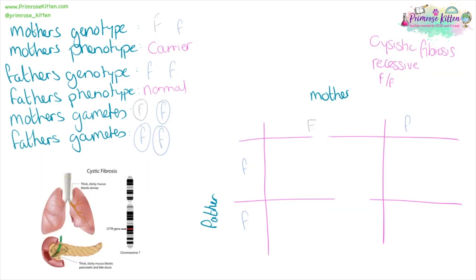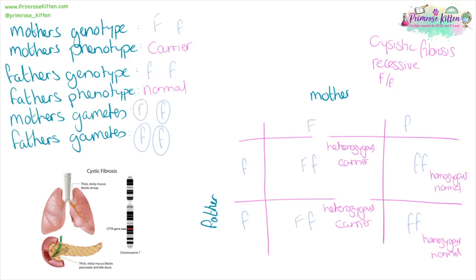Cystic fibrosis is a recessive disease. As we saw in the first example, if we have two parents that are carriers, there is a one in four chance of an offspring having the disease. If only one parent is a carrier, then the chance of the baby having cystic fibrosis is virtually nothing apart from a brand new mutation, and the chance of being a carrier is 50%.